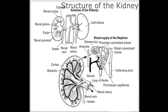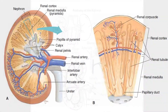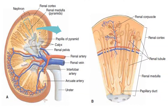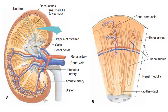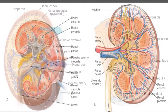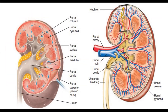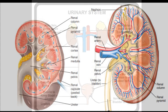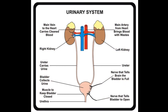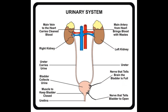Structure of the kidney: Internally, each kidney is composed of an outer darker region called the cortex and an inner lighter region called the medulla. The medulla drains the urine into a funnel-shaped structure called the renal pelvis. The ureters originate from here.